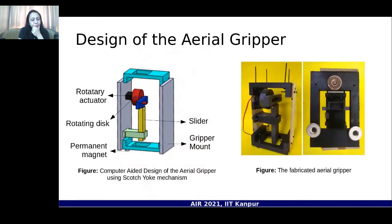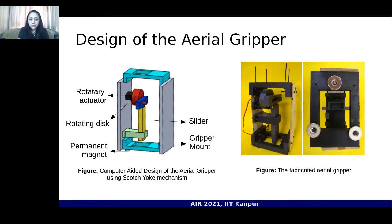The proposed gripper, as seen in the CAD model on the left, features a rotary actuator, a rotating disc as part of the Scotch-yoke mechanism, and a slider that moves up and down. Permanent magnets at the bottom attract ferrous-coated surfaces, and these are enclosed in a gripper mount attached to the drone. The fabricated gripper shows three magnets arranged in an equilateral triangle for stability during grasp; the triangle side depends on the ferrous coating area and the mass of the object.